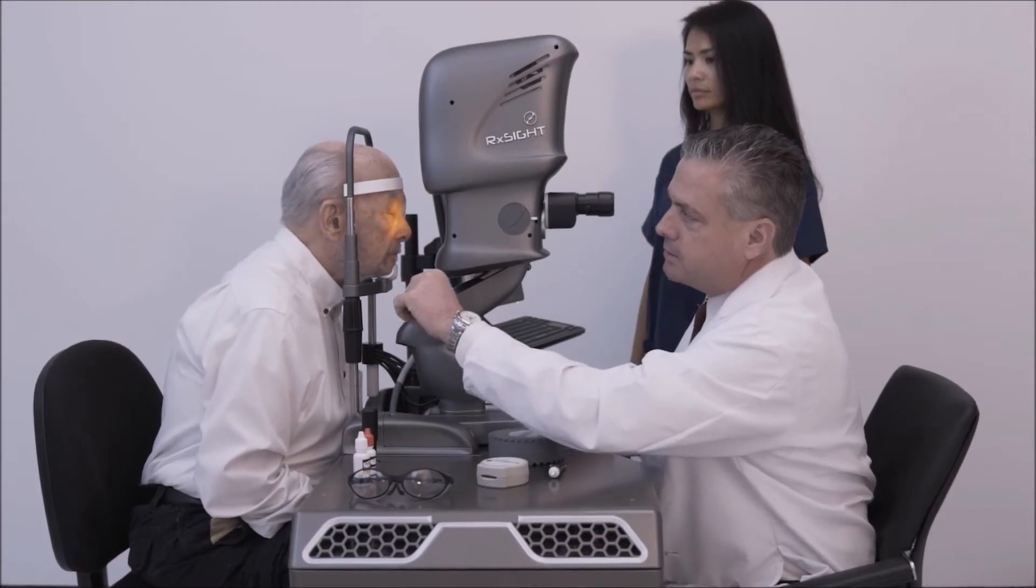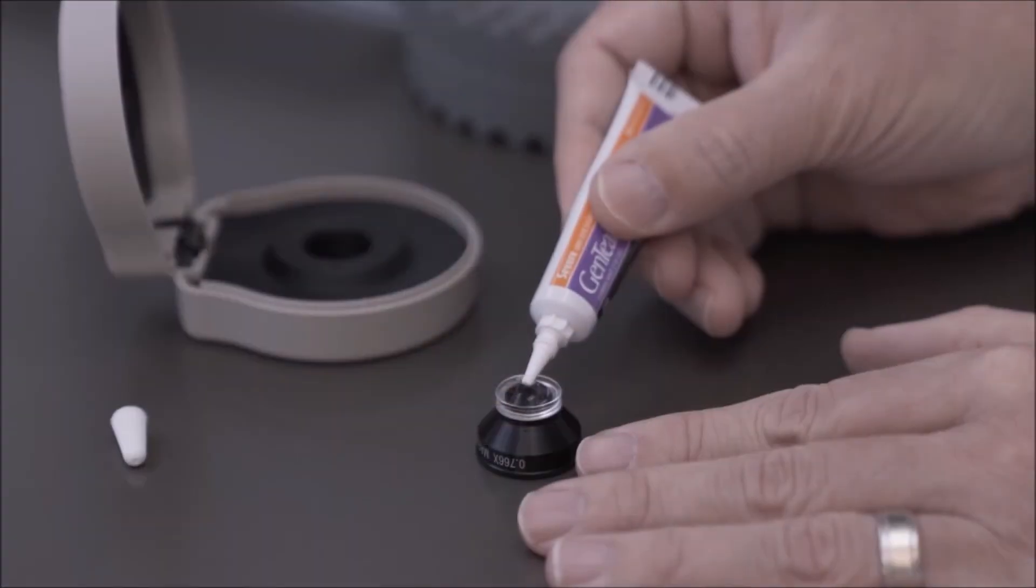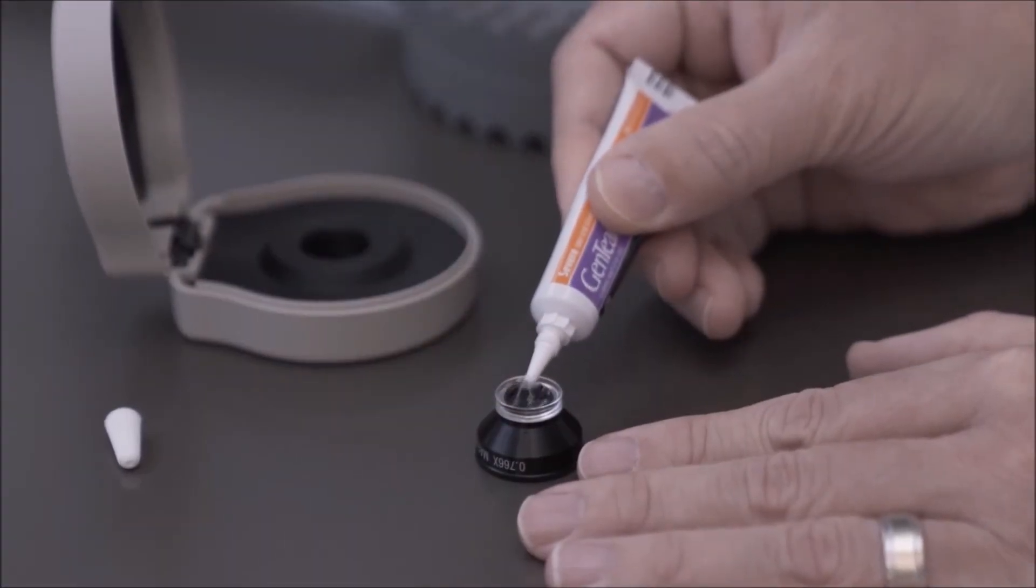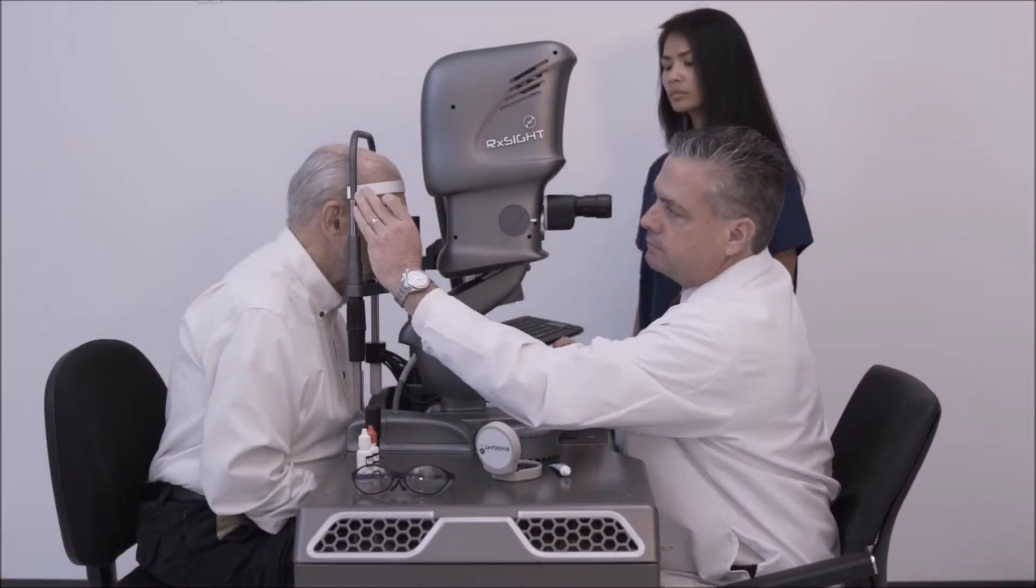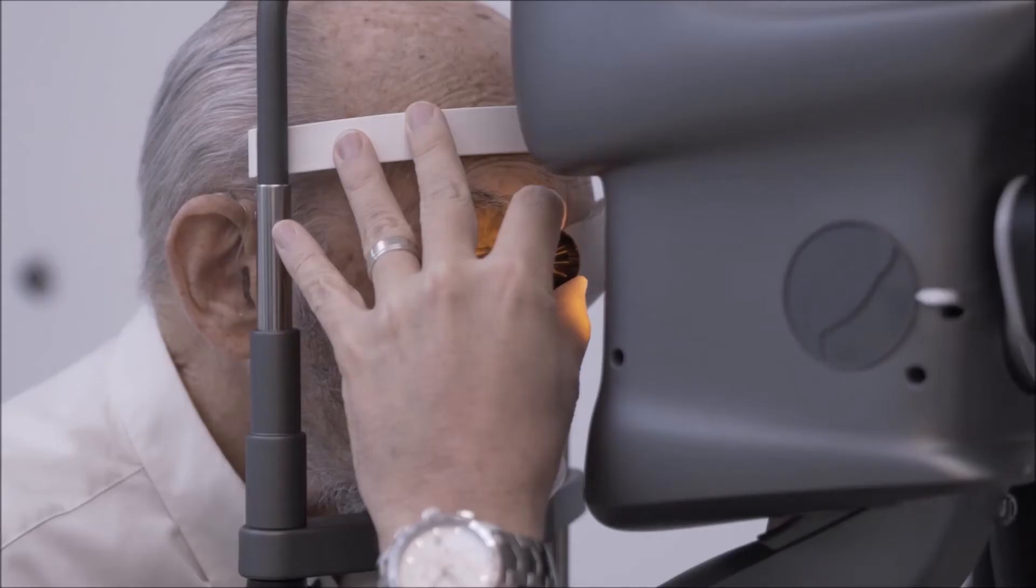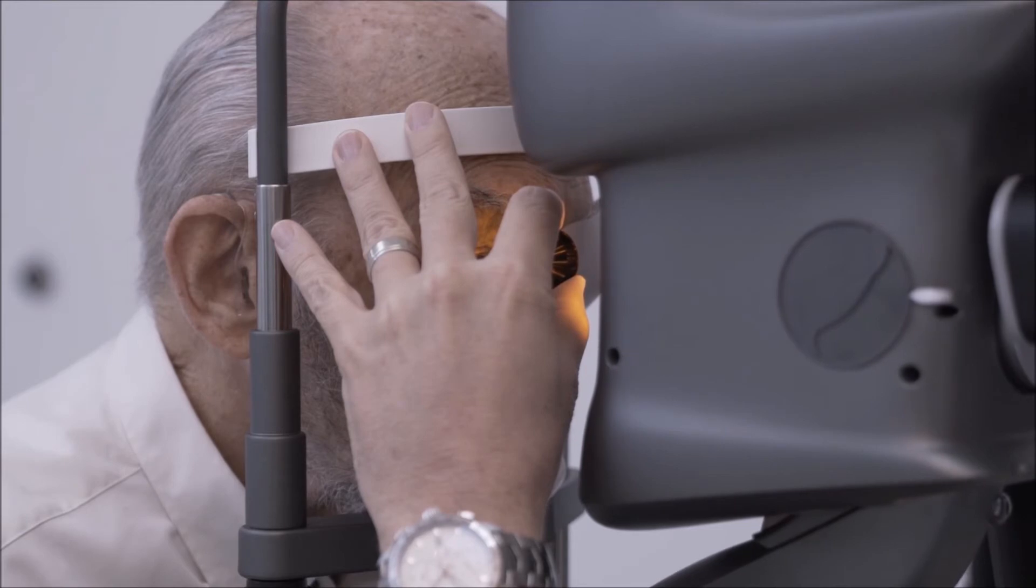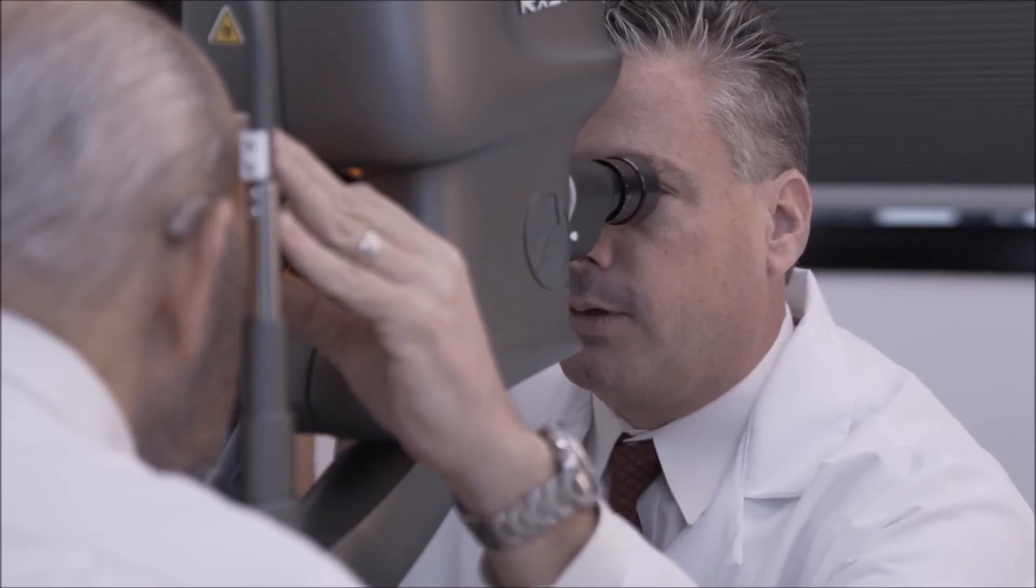During the adjustment procedure, which takes approximately 40 to 120 seconds, the patient is dilated and seated at the light delivery device. A proprietary contact lens is applied to the patient's eye to provide visibility of the RxLAL and focusing of the UV beam.